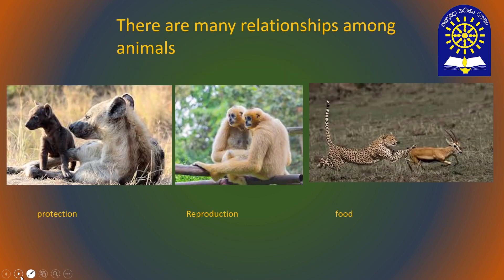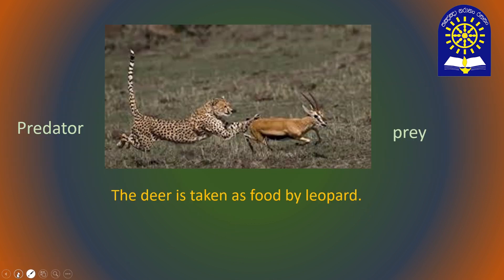Animals meet together for various needs. Young animals follow parent animals for protection. Adult animals meet for reproduction. Or animals meet together by means of food. You can see here a leopard hunts a deer. So the deer is the prey and the leopard is the predator.